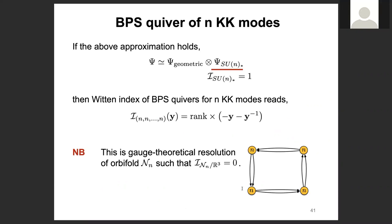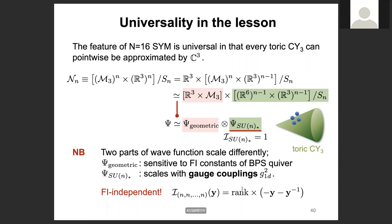Audience question (Boris Pioline): What is the justification for neglecting the influence of the singularity when looking at the relative dynamics of the N D0 branes? You approximate your Toric Calabi-Yau by flat space — that seems to be key in reaching this result.